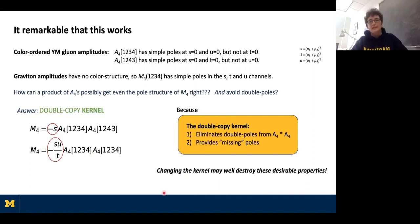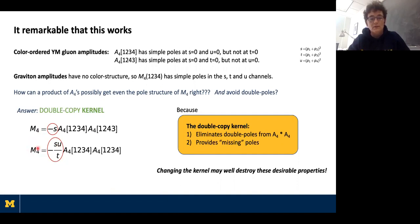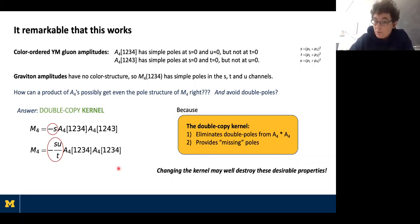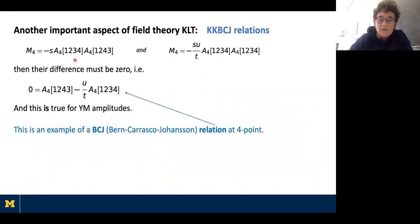In the title I said that we have a bootstrap for the KLT double copy. What we're really interested in is exploring what kinds of double copies might exist. We see that any way of trying to change the double copy kernel would very likely mess up this nice structure of providing the right pole structure. It's non-trivial to alter the kernel in such a way that what you produce from the double copy is an amplitude of a local field theory, even at tree level.